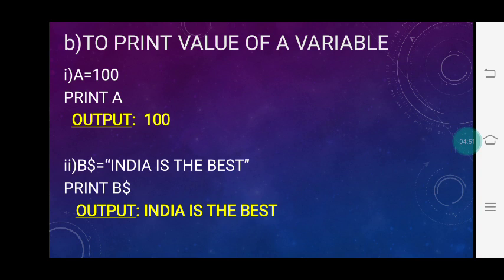Next example: b$ = "India is the best". Here we are going to display the message using double quotation marks, so we will get the output: India is the best.